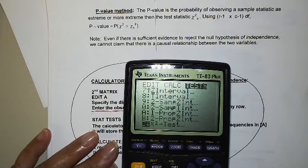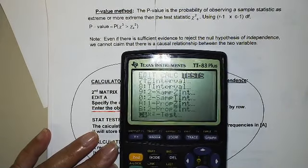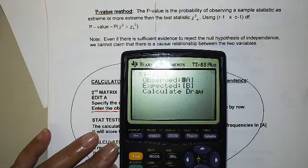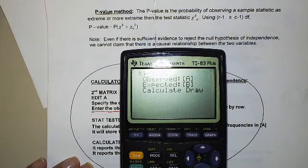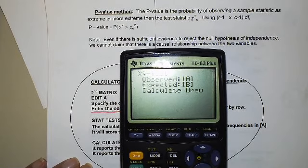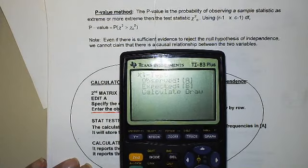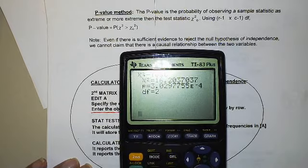Then go back to here. Stat, test, chi-square test. Stat, test, chi-square test. It's letter C on my calculator. Hit enter. Observed is A. Just hit enter. Expected is B. Just hit enter. It will create an expected matrix for you.